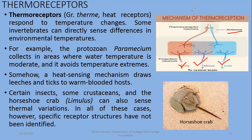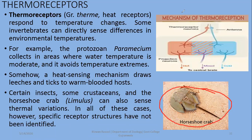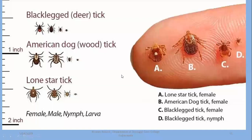Thermoreceptors are particularly important for the foraging and feeding behavior of blood parasites. Certain insects, crustaceans, and the horseshoe crab Limulus can also sense thermal vibrations. In all of these cases, however, specific receptor cells have not been fully identified, but there must be certain sensory neuron-like cells responsible for temperature detection. Ticks may show different types of thermal responses to detect and locate their warm-blooded hosts.